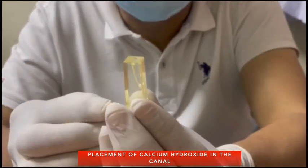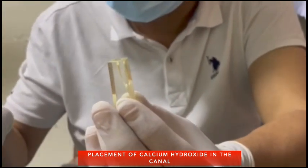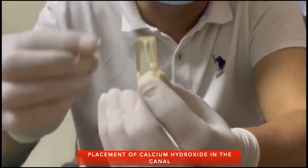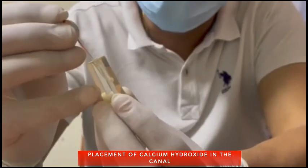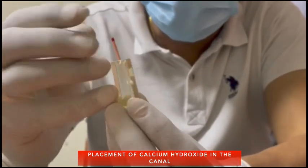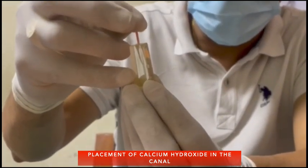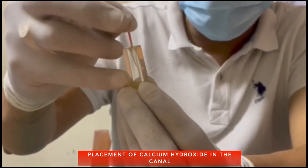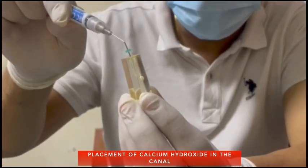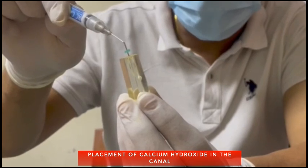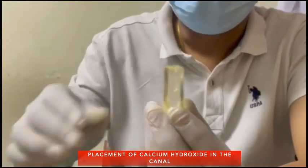In a block you can see where the calcium hydroxide is going, but in a tooth it is very difficult. What I do is use the same size of a spreader or gutta-percha, measure the length 2mm short of the working length, put it inside, and in a vertical motion compact it. Then remove it and gently pour calcium hydroxide again to 2mm short of the working length.